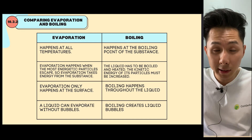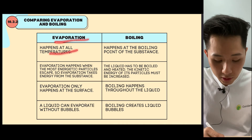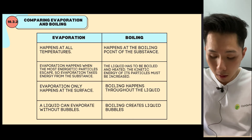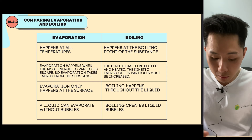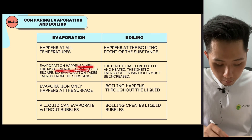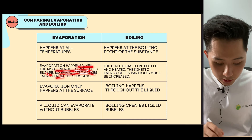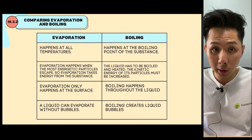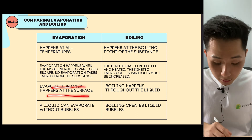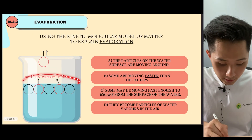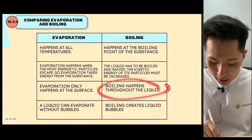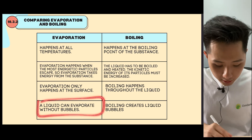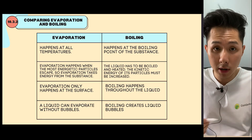Here are a few differences between boiling and evaporation. Evaporation happens at all temperatures, although the higher the temperature, the faster it happens. Boiling can only happen at the boiling point of the substance. Evaporation happens when the most energetic particles escape, so evaporation takes energy from the substance. Boiling requires the kinetic energy of all particles to increase. Evaporation only happens at the surface, whereas boiling happens throughout the liquid. The liquid can evaporate without bubbles, whereas boiling will certainly create bubbles.